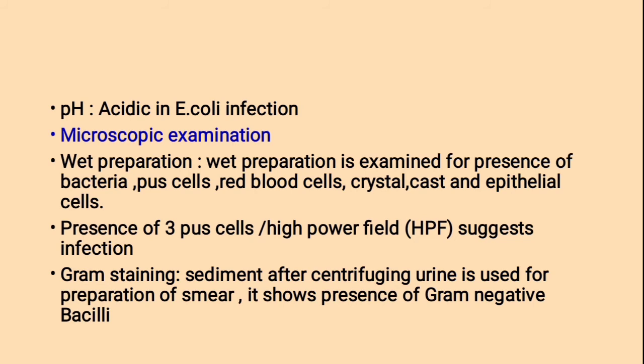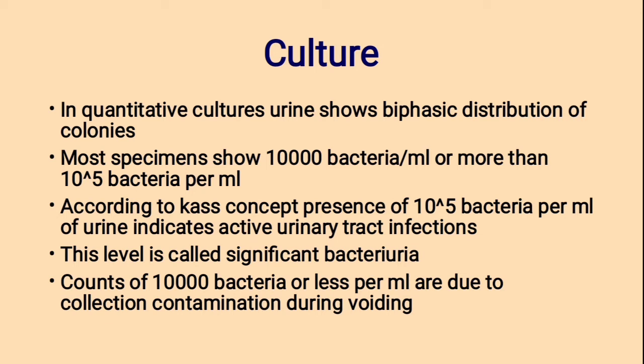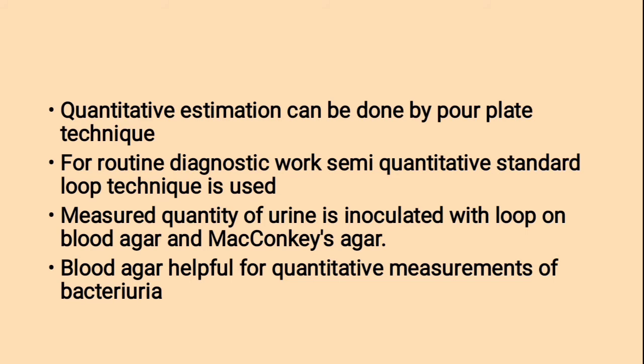Culture: quantitative cultures of urine show biphasic distribution of colonies. Most specimens show more than 10⁵ bacteria per ml. According to Kass's concept, presence of 10⁵ bacteria per ml of urine indicates active urinary tract infection — this is called significant bacteriuria. Counts of 10,000 bacteria or less per ml are due to contamination during voiding. Quantitative estimation can be done by pour plate technique; for routine diagnostic work, semi-quantitative standard loop technique is used.